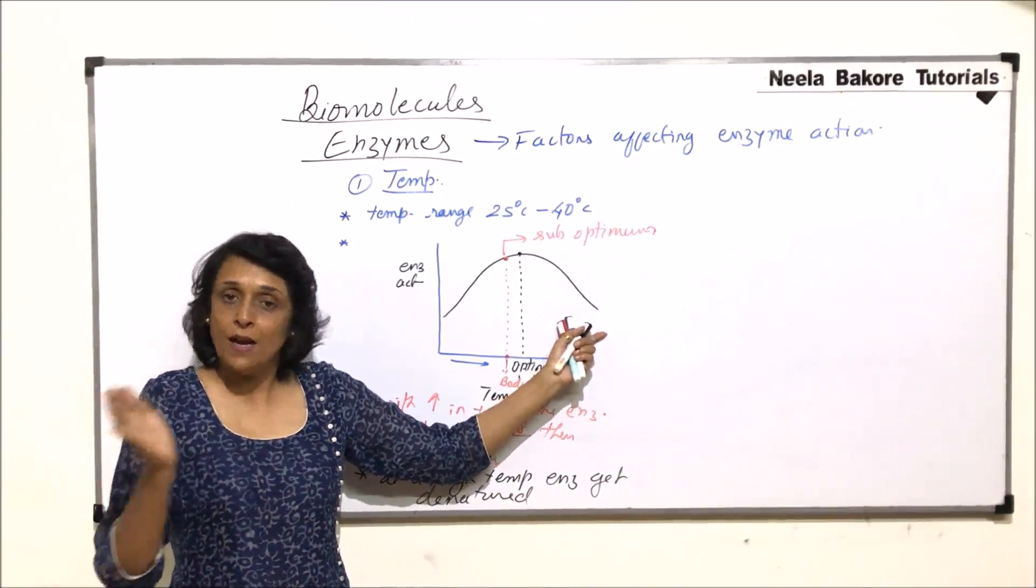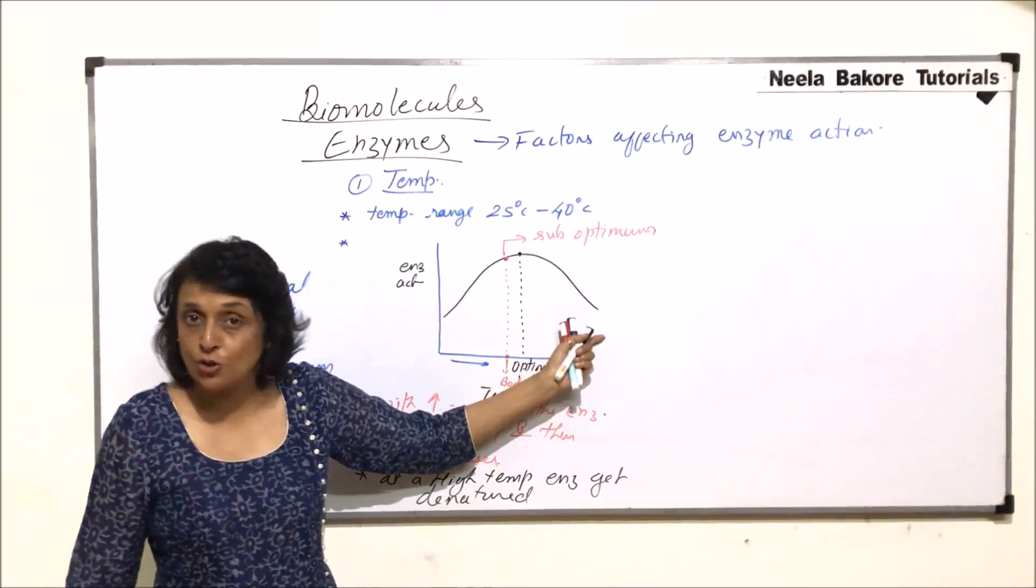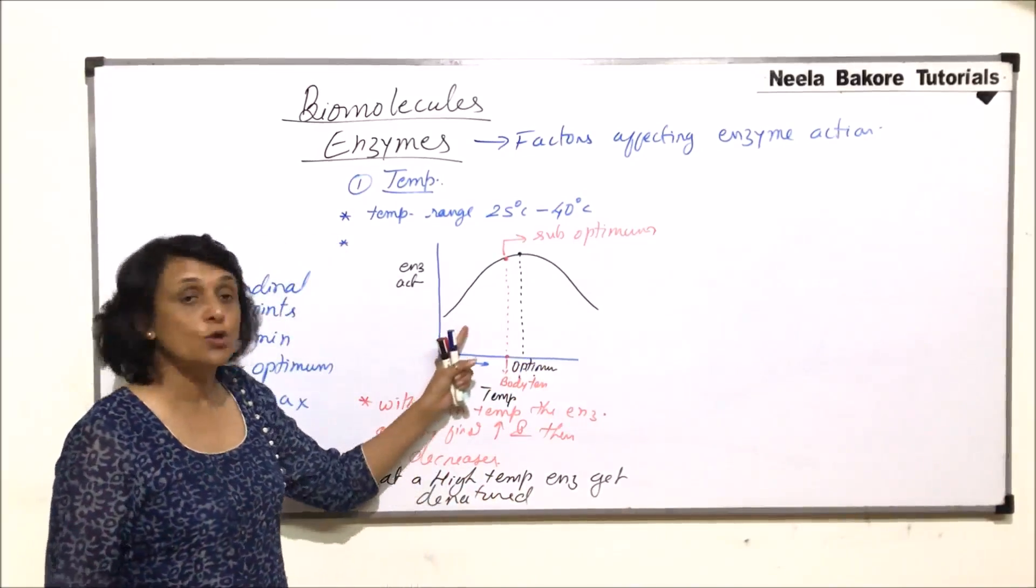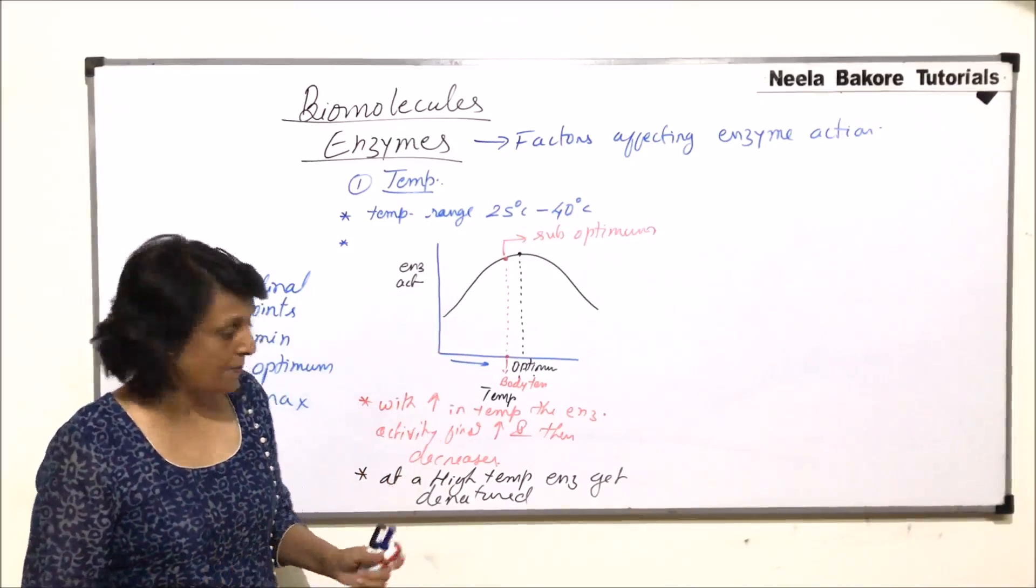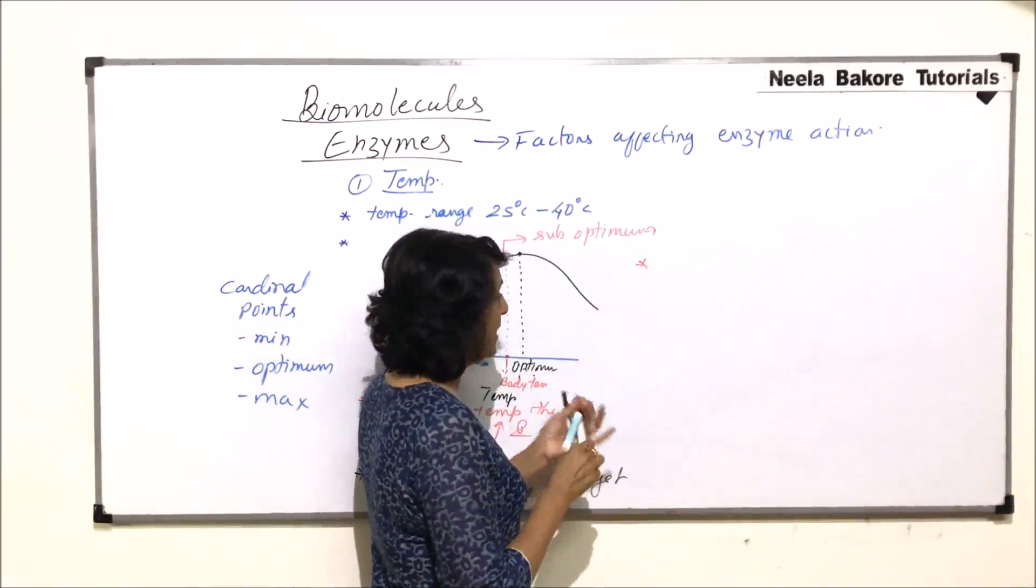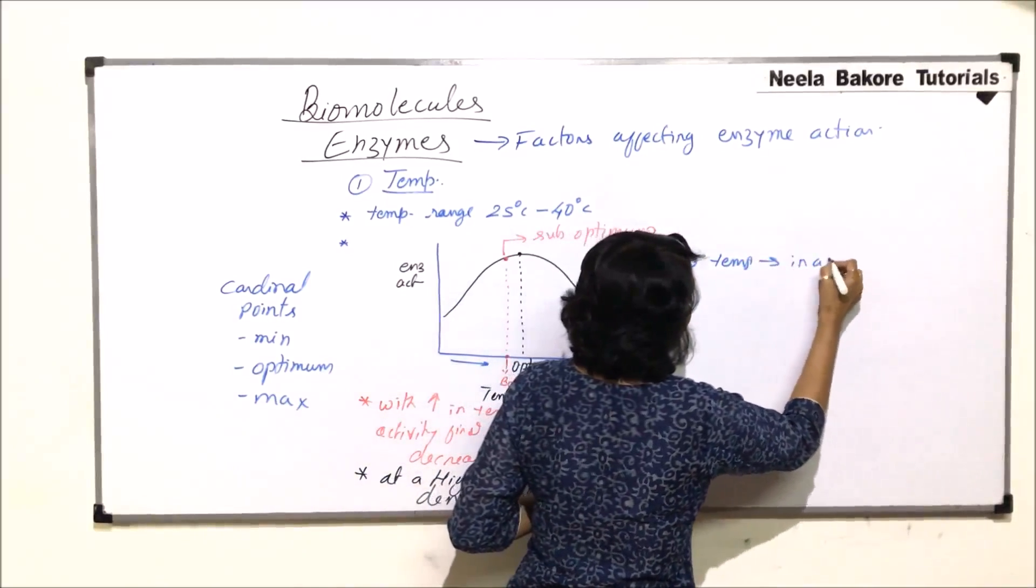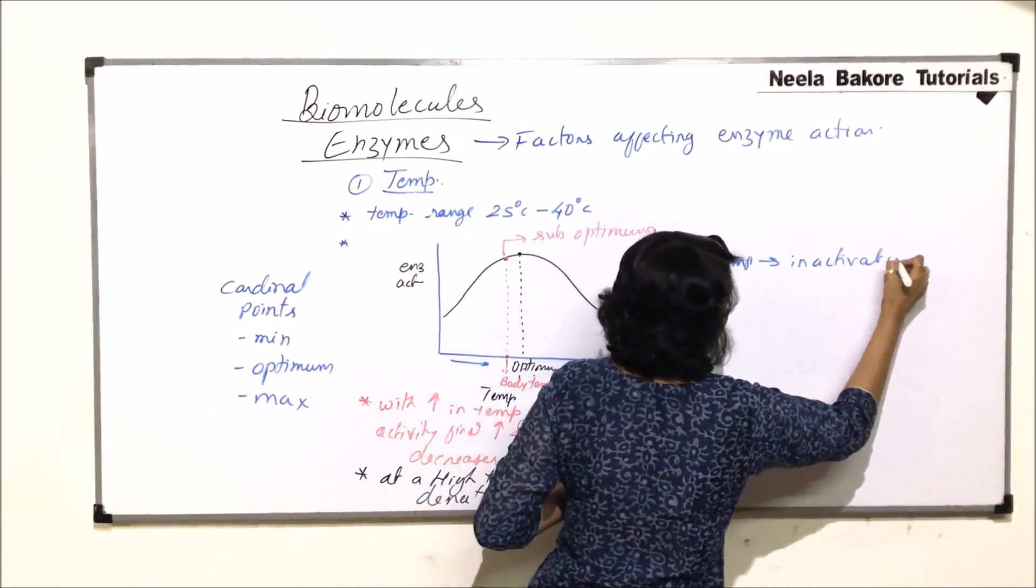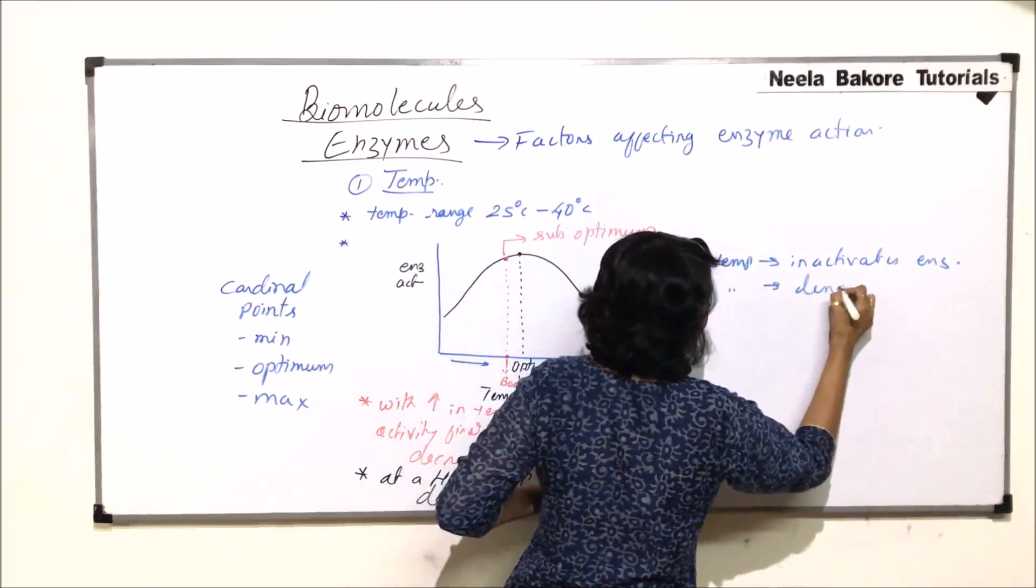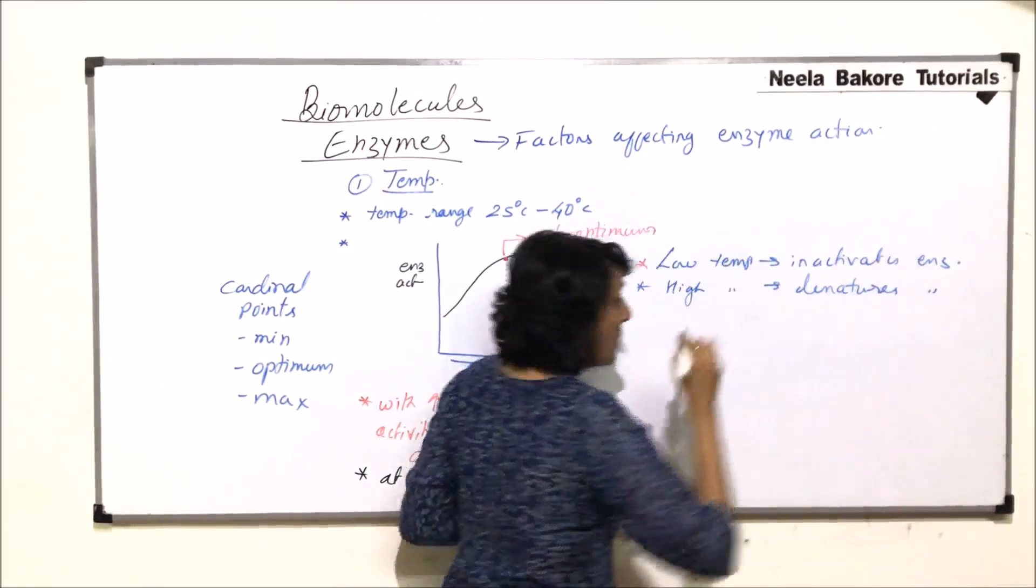So when heated food is brought back to normal, those enzymes do not regain their structure. Because this enzyme formation can take place only in the living system, not outside. So low temperature inactivates enzymes, high temperature denatures it. Low temperature inactivates enzymes and high temperature denatures enzymes.